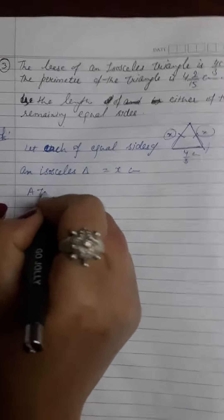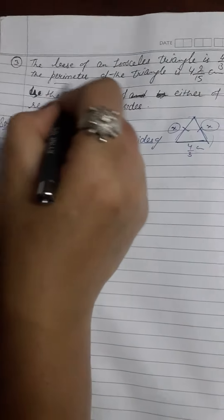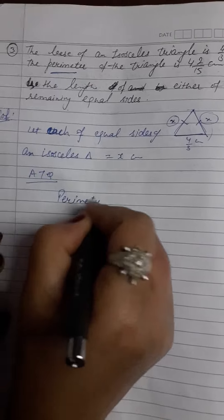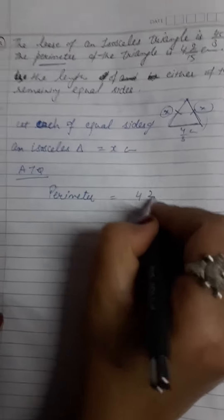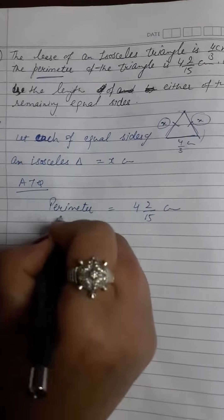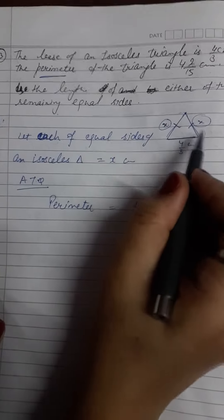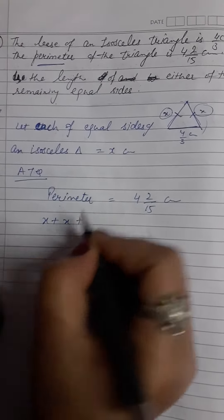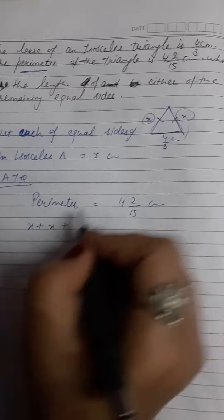Now, according to the question, we have given the perimeter. Perimeter of triangle is sum of all sides. Perimeter is equal to 4 and 2 by 15 cm. So let's add all sides: two sides are the same, that is x and x, and the third side we have given, that's 4 by 3 cm.